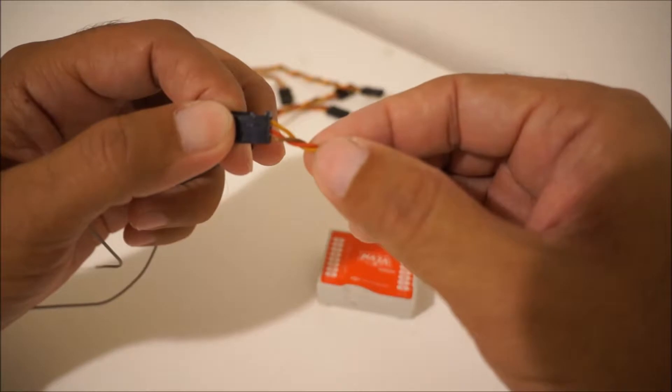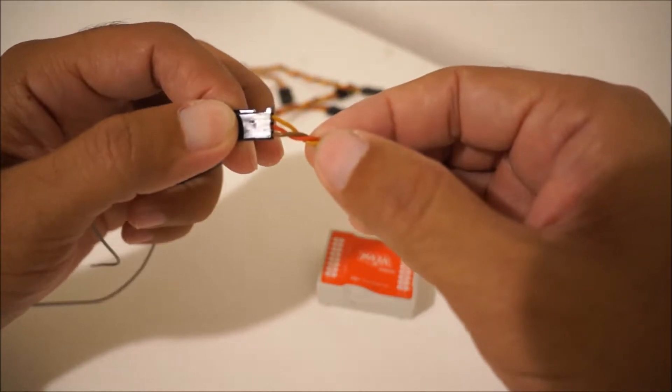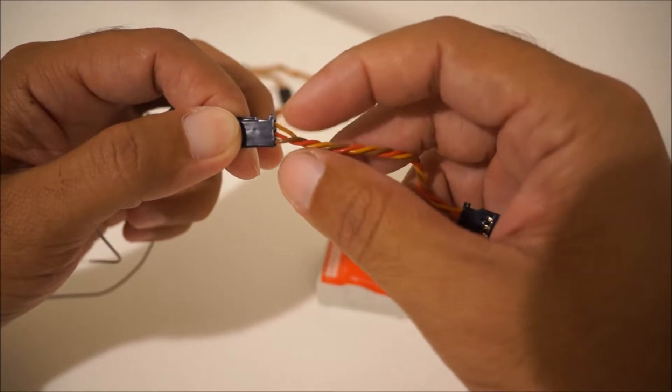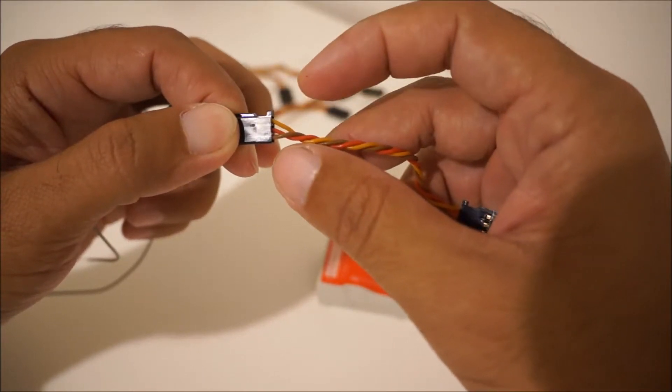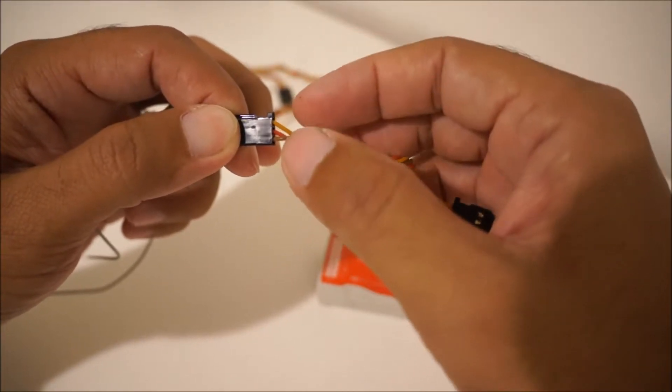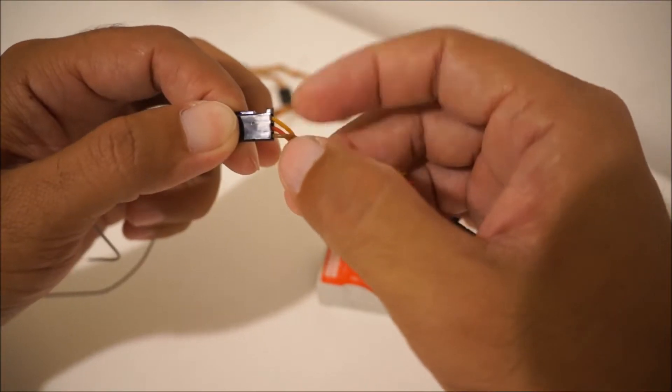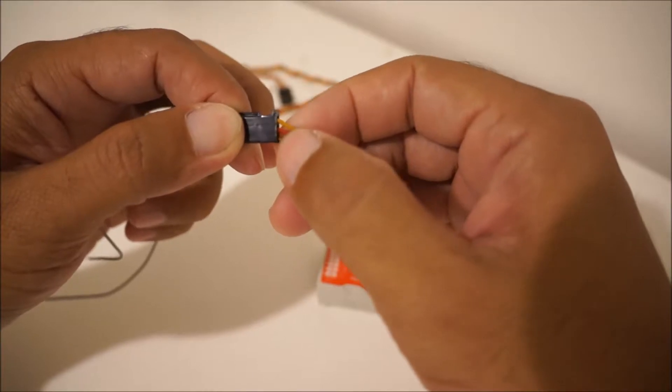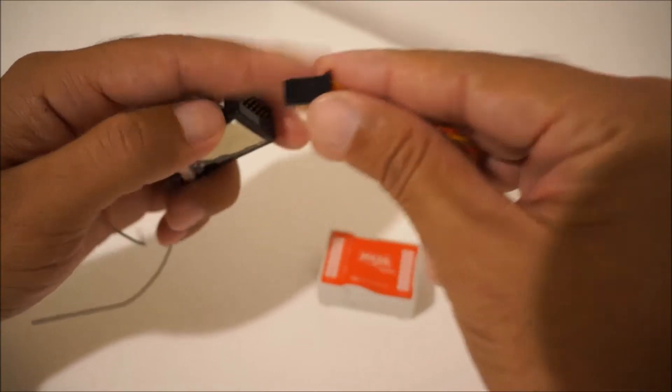So on this cable here you have a red in the middle, a brown in the bottom, and an orange on the top. Sometimes the orange is a white, but if it's white or orange that means that's your signal cable. Red is always going to be positive and black or brown is going to be negative, so pay attention to that when you're plugging those in.